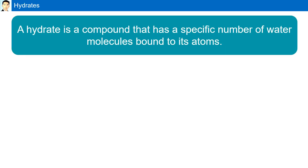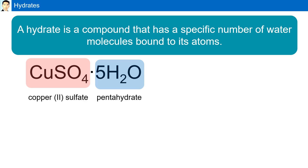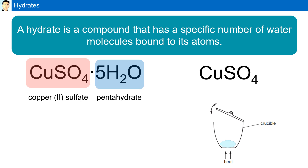Hydrates. A hydrate is a compound that has a specific number of water molecules bound to its atoms. For example, copper sulfate that has five water molecules bonded to it. The copper sulfate component is shown with a dot between the salt component and the water component. It is known as copper two sulfate pentahydrate, the 'penta' representing five water molecules. If we place the copper sulfate pentahydrate in a crucible and apply heat, the water component will evaporate and all that remains is the anhydrous copper sulfate — 'anhydrous' meaning without water. Using this, we can determine the percentage of water present in the hydrate.